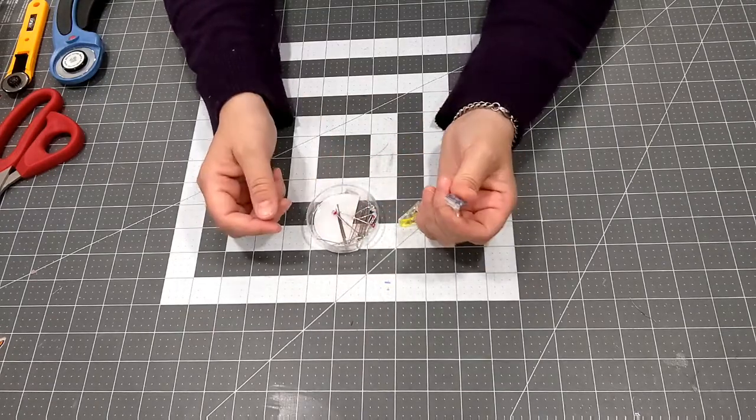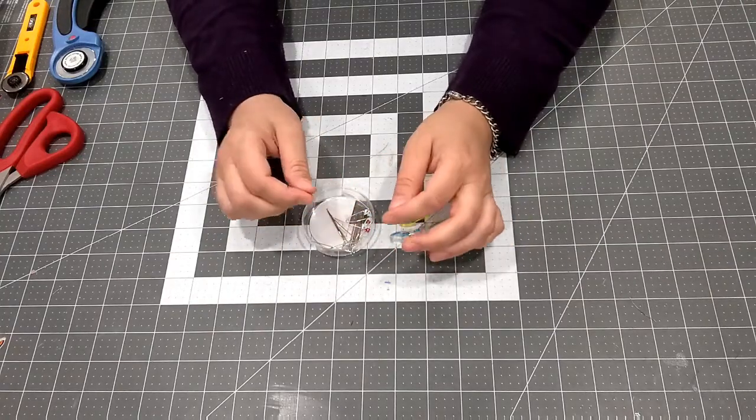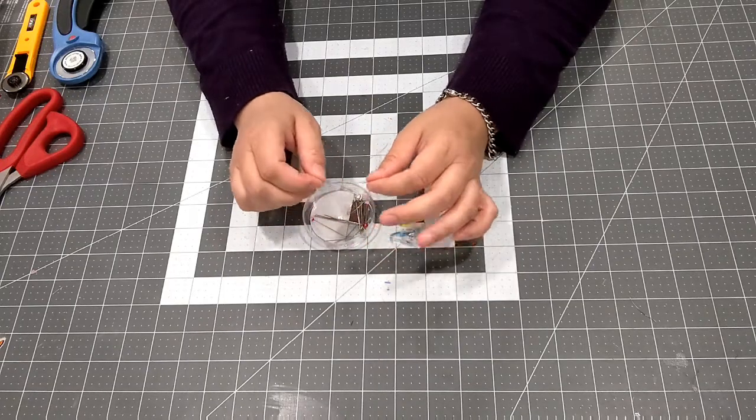You can get them from Amazon or fabric shops. All this stuff is available on Amazon and your fabric stores like Michaels. And then you have your stick pins, which there's lots of times that you absolutely need them—they will keep your fabric in place.